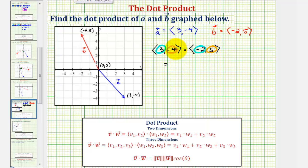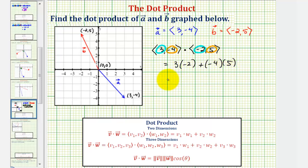Three times negative two plus negative four times positive five is equal to negative six plus negative twenty, which is equal to negative twenty-six.